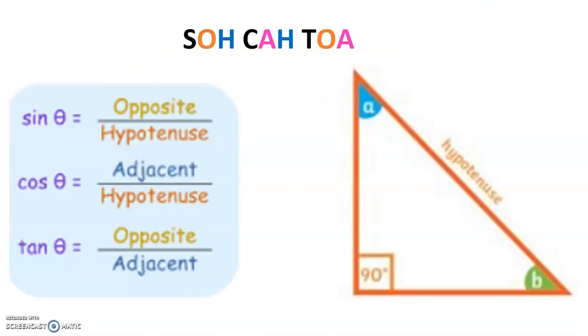So to determine unknown side lengths of right angle triangle when you've got angles involved remember SOHCAHTOA.